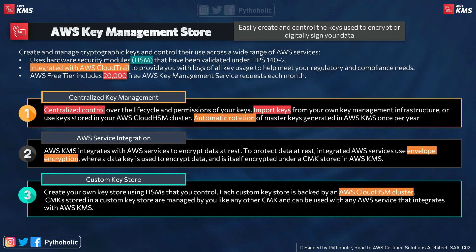Moving on, when it comes to compliance and auditing, you can integrate KMS with CloudTrail so that it can keep track of what is going on in the encryption modules and alert you on changes. Also, if you are using the AWS free tier, it includes 20,000 free KMS requests each month — though it depends on how much you use the service.